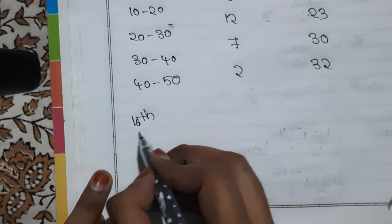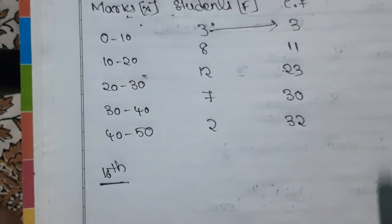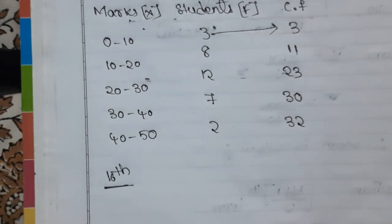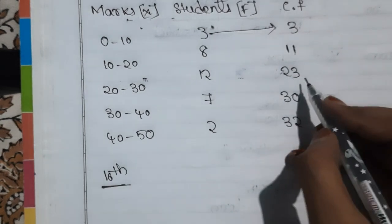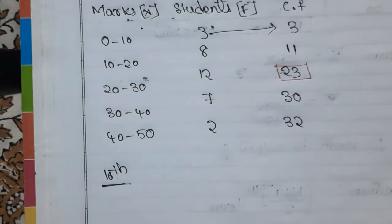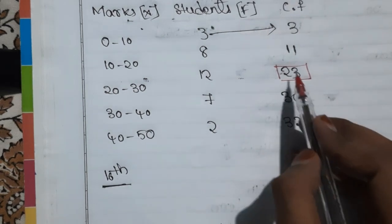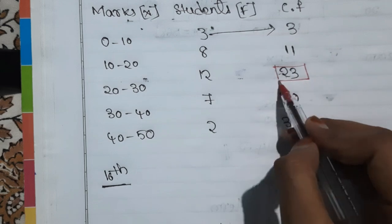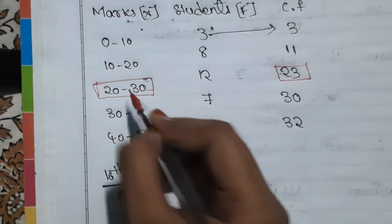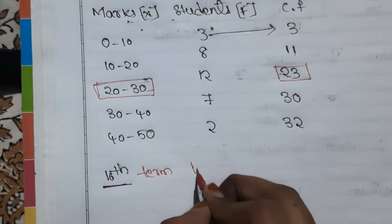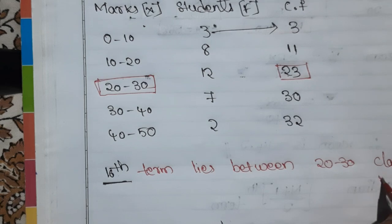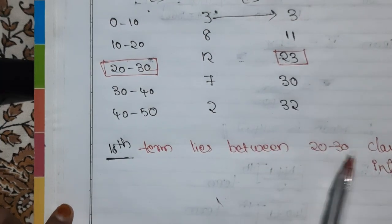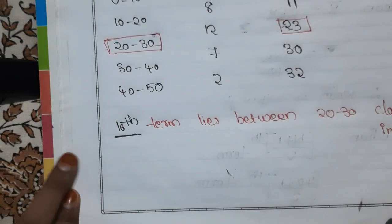We need to locate the 16th term in the cumulative frequency. The value 16 does not appear directly, so we take the next higher cumulative frequency after 16, which is 23. The class interval corresponding to CF of 23 is 20–30. Therefore, the 16th term lies in the 20–30 class interval — this is our median class.